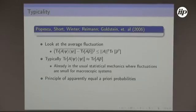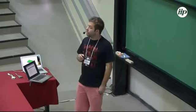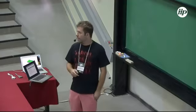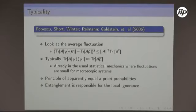This is the principle of equal or prior probability — it says you don't have to use the ensemble; it's just an easy way to make calculations. This is one way to justify why statistical mechanics works. It's also nice that entanglement is responsible: if you have a separable state, depending on the observable, those are the states where you'll make big errors. The reason you get the same result from the ensemble as from a pure state is entanglement.